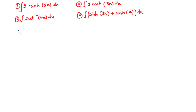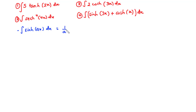We would like to start with this. The integral of sinh ax dx: you differentiate ax to get a, and that appears at the denominator. So you have 1 over a times cosh ax plus c. So sinh changes to cosh.